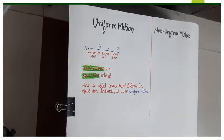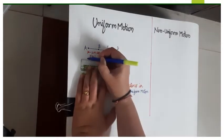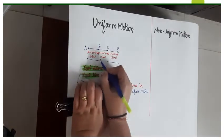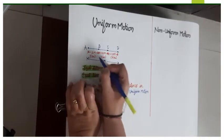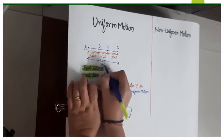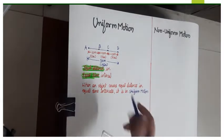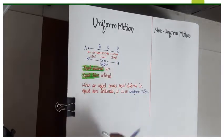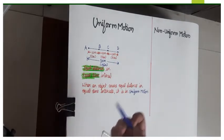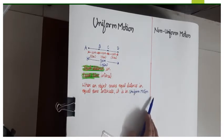The object has covered a total of 30 meters in a total time of 15 seconds. Here the object is covering equal distances in equal time intervals, and such a motion — when an object covers equal distances in equal time intervals — it is said to be in uniform motion.